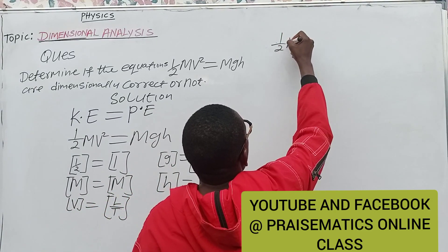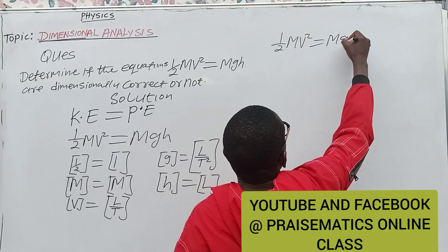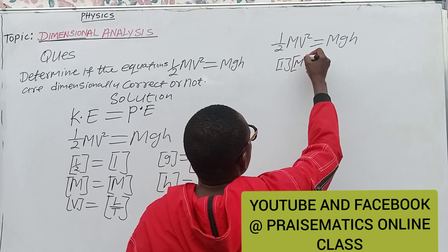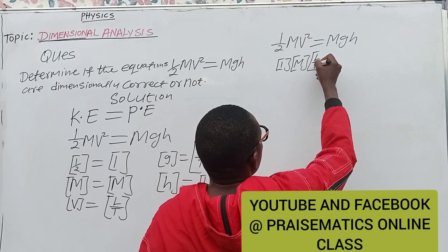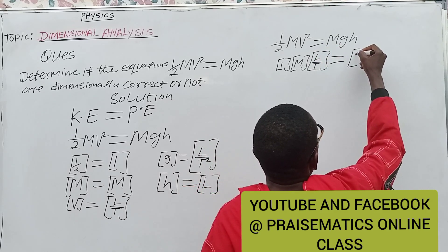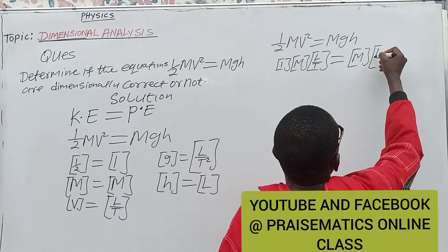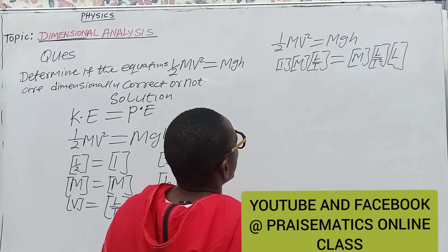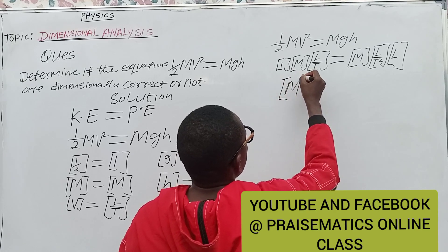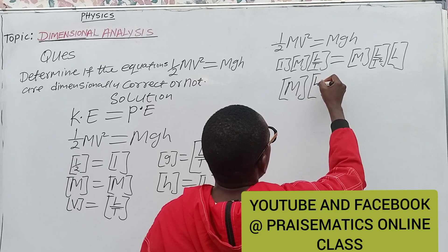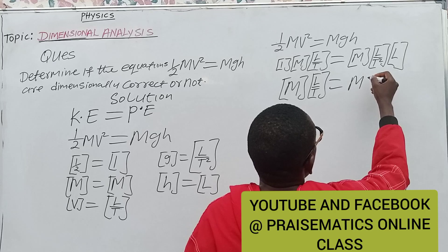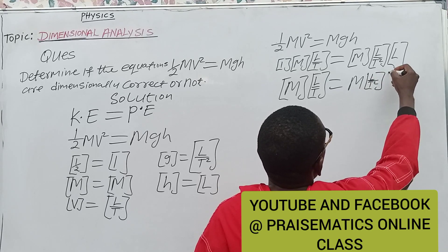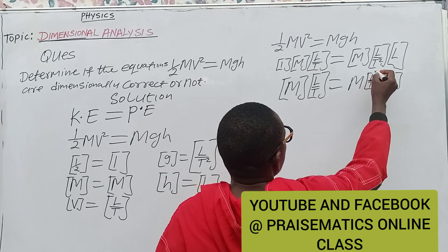Having done that, now let's proceed. We have that 1/2 mv² — is it equal to mgh? The dimension of the left side: 1 (dimensionless) × dimension of mass × dimension of velocity, which is (L/T)², is equal to the dimension of mass × dimension of g (L/T²) × dimension of h (L).